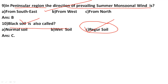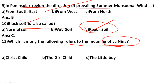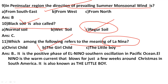What does La Nina mean? Options: Christ child, girl child, little boy. The correct answer is B, the girl child. La Nina means the girl child. El Nino is a positive phase, and the Southern Oscillation occurs in the Pacific Ocean — the southern part of the Pacific Ocean has this oscillation movement.